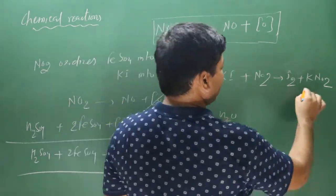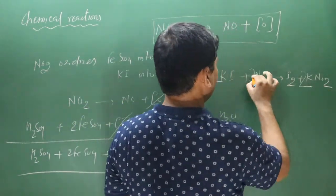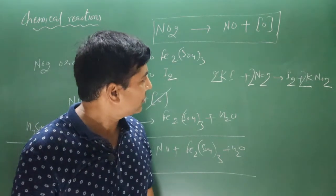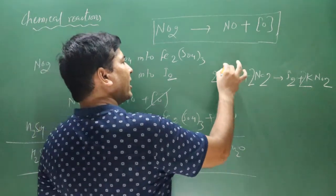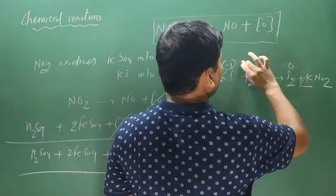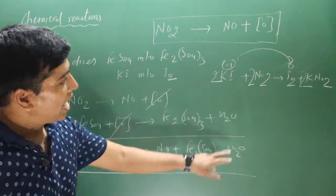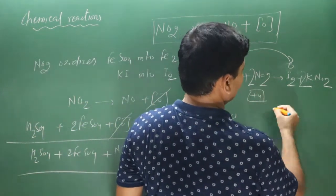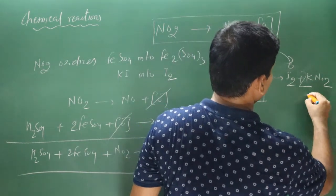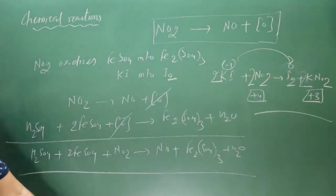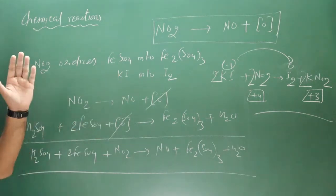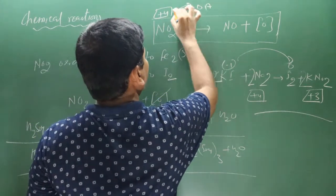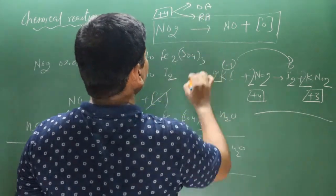Balancing the KI equation by multiplying by 2. Nitrogen is in its +4 oxidation state in NO2 and goes to +3 in nitrite — this is reduction. Iodide (−1) goes to I2 (0) — this is oxidation. Since nitrogen is in an intermediate oxidation state, it can act as both oxidizing and reducing agent.